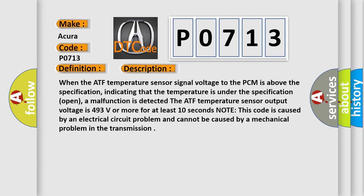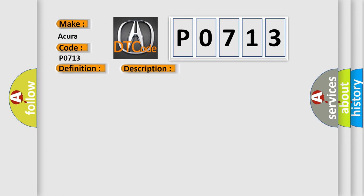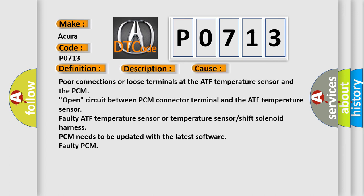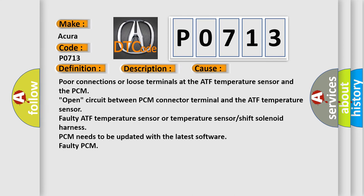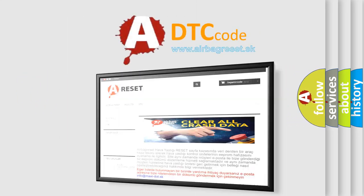Note this code is caused by an electrical circuit problem and cannot be caused by a mechanical problem in the transmission. This diagnostic error occurs most often in these cases: Poor connections or loose terminals at the ATF temperature sensor and the PCM, Open circuit between PCM connector terminal and the ATF temperature sensor, Faulty ATF temperature sensor or temperature sensor shift solenoid harness, PCM needs to be updated with the latest software, Faulty PCM.